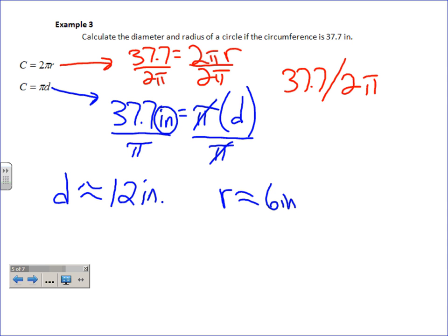This is about what it would look like on your calculator if you type it in just that way. It's going to do multiply, multiply, and divide from left to right. So it's going to take 37.7, divide it by two, and then multiply by pi, which is not what you want it to do.